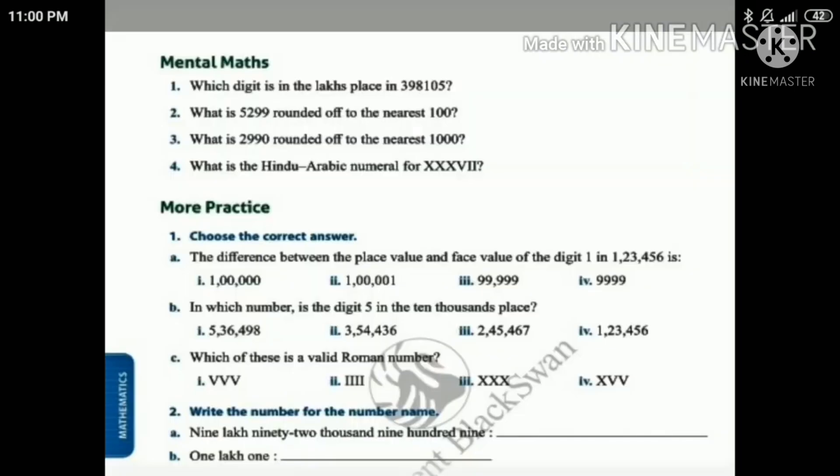Now let us do some mental maths. Which digit is in the lakh place in the number 3,98,105? When we read it itself we can find the answer isn't it, so the answer is 3. Now what is 5,299 rounded off to the nearest 100? When we have to round a number to the nearest 100 we have to see the digit in the 10th place, so what is the digit in 10th place? 9, and so it is greater than 5, so it is rounded up to 5,300.